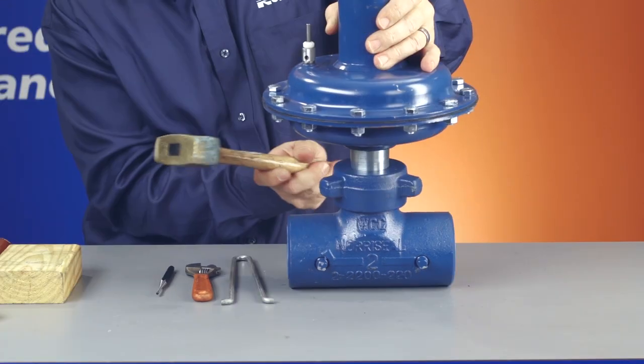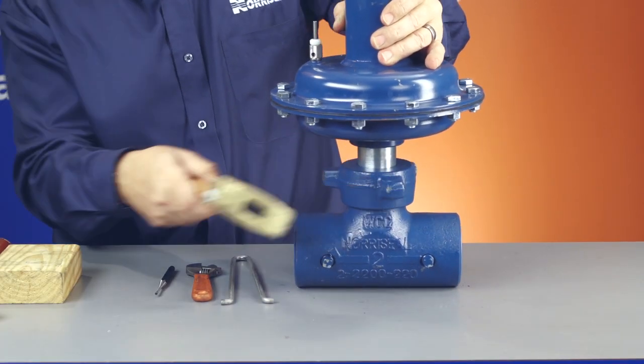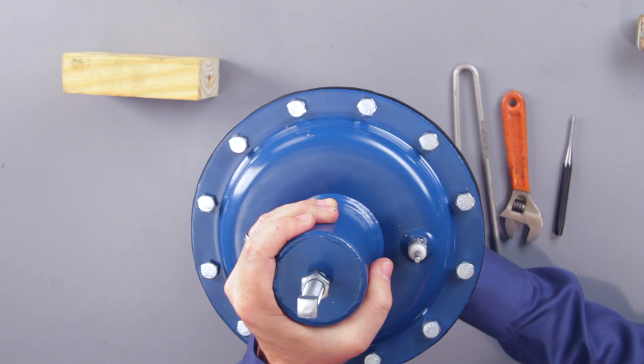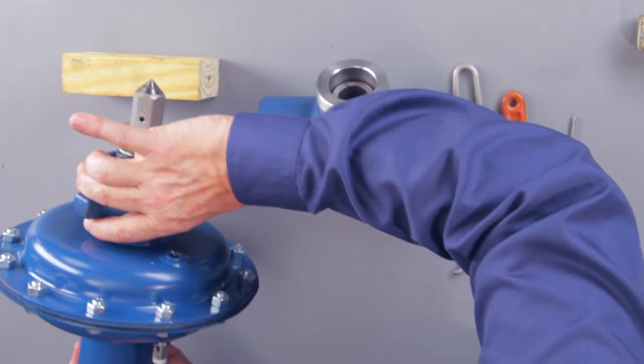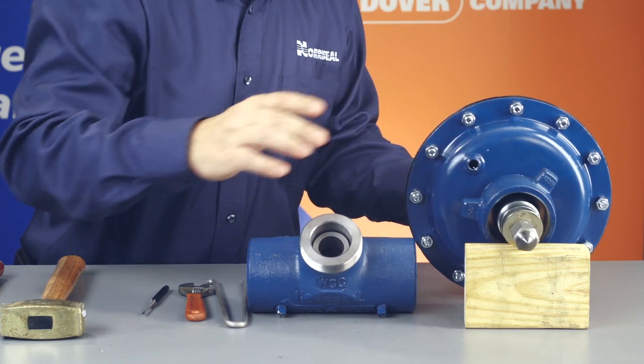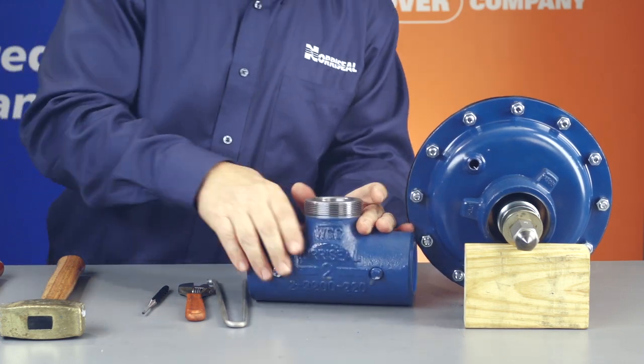Next, unscrew the hammer nut from the valve body by striking the lugs with a hammer. Then, lift the actuator from the valve body and place it on a stable work surface. Make sure you don't damage the o-ring sealing surfaces when you remove the actuator from the valve body.